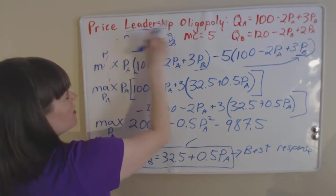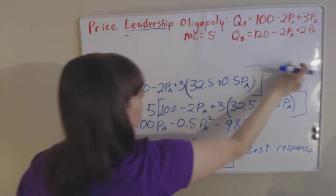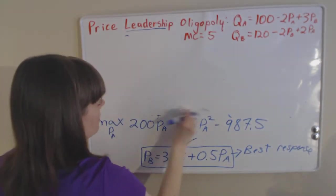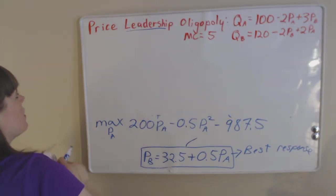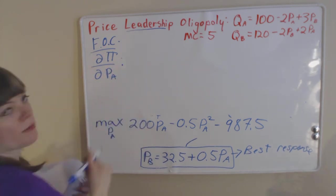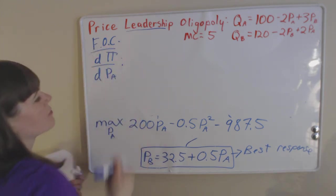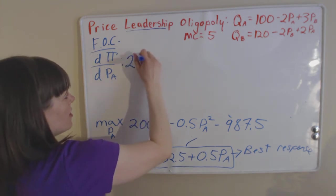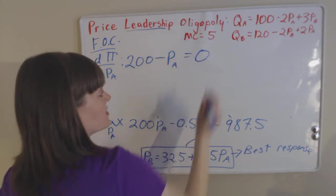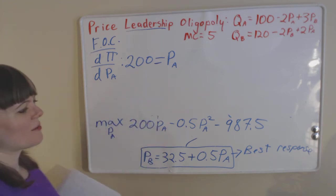We take the first order conditions of firm A's maximization problem by taking the derivative with respect to PA. We get 200 minus PA equals zero. So clearly PA equals 200. That's a nice round number — we're pretty happy about that. Now we just need to find the price of firm B, the quantity of firm B, and the quantity of firm A.